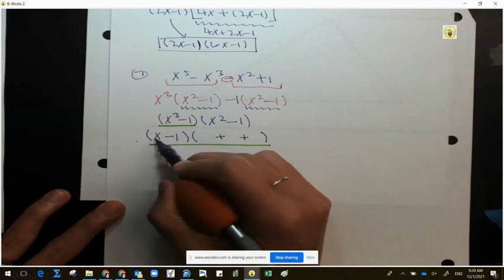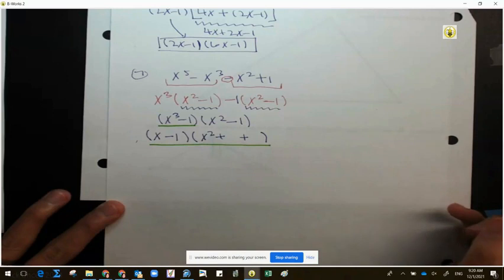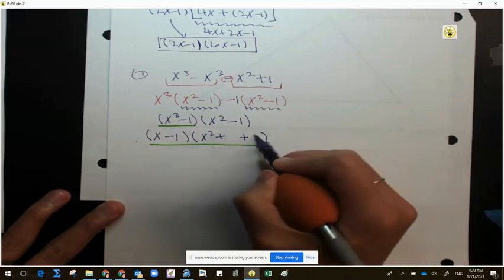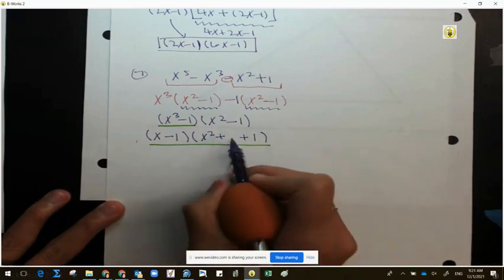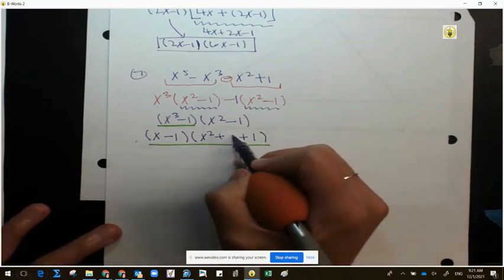And I must have the 1 right here. And the next one is basically x times x, which is x squared. The last one is 1 times 1, which is 1. The middle is combination between these two. So x times 1 is simply 1x.